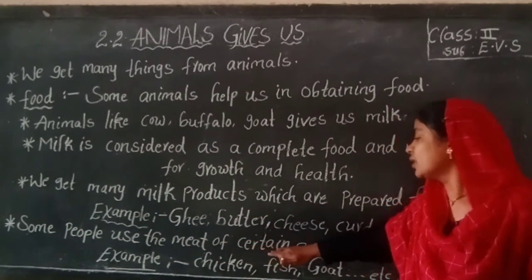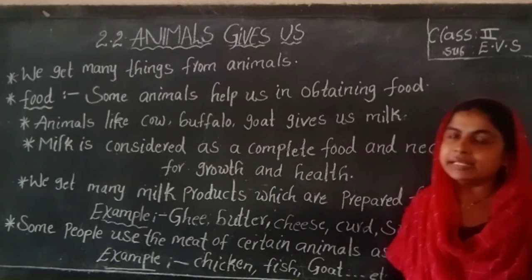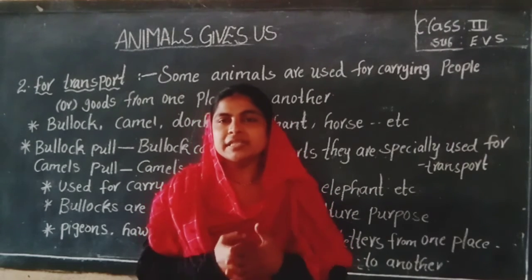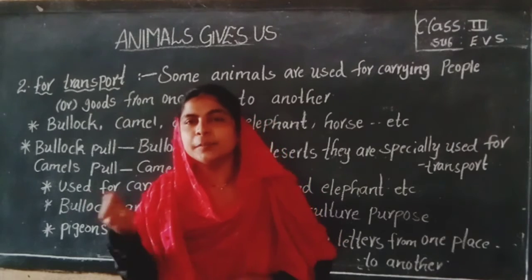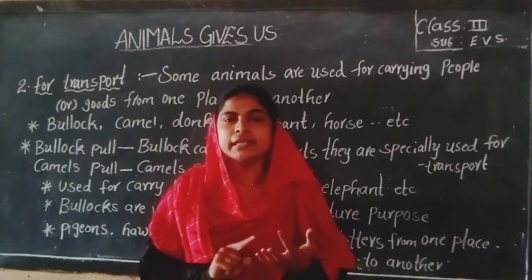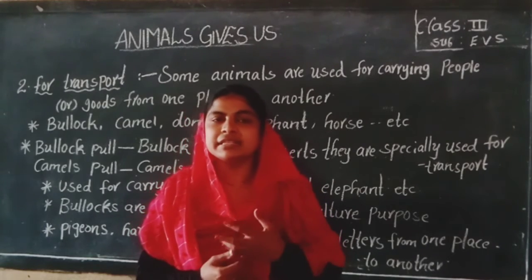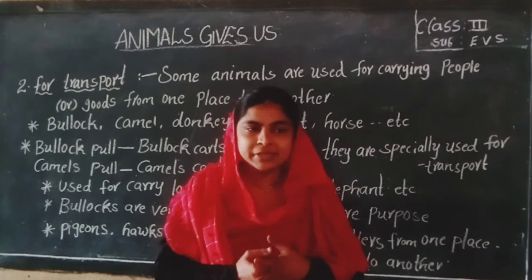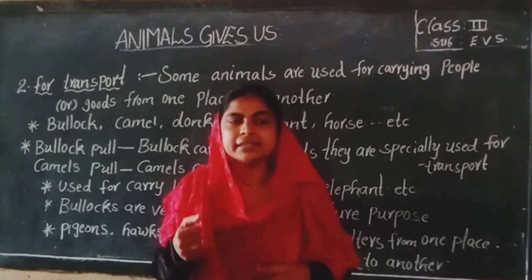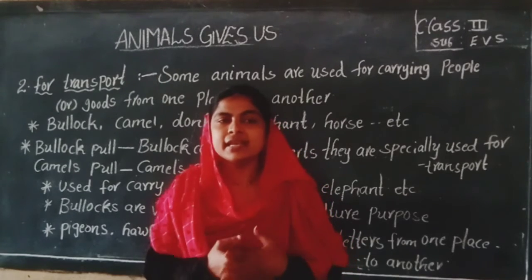Some people use the meat of certain animals as food. For example, chicken, fish, goat, etc. The meat of some birds is also eaten, like hen and dove. Hen, dove, and some other birds lay eggs. Eggs are considered a healthy food which is rich in proteins.